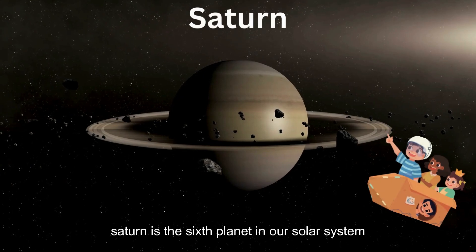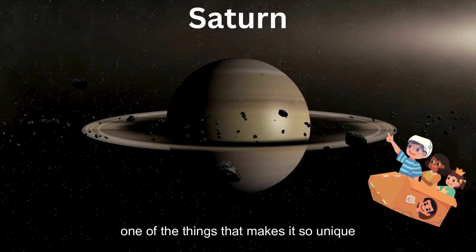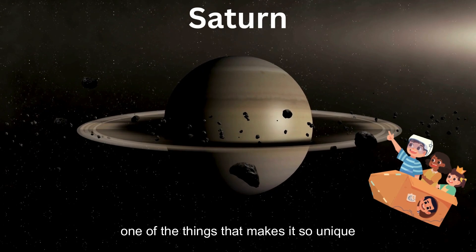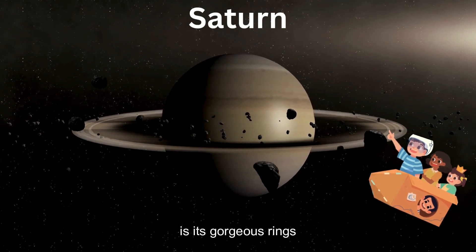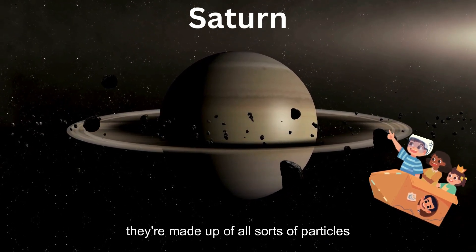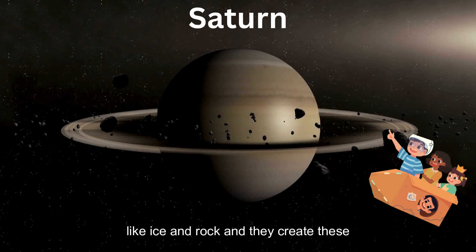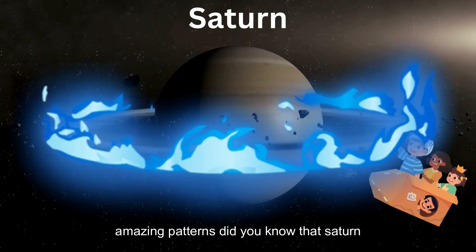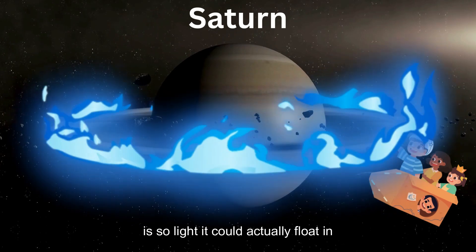Saturn is the sixth planet in our solar system. One of the things that makes it so unique is its gorgeous rings. They're made up of all sorts of particles like ice and rock, and they create these amazing patterns. Did you know that Saturn is so light, it could actually float in water if there was a big enough bathtub?